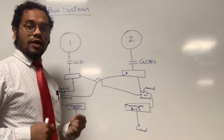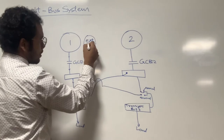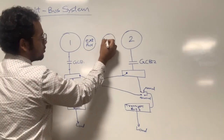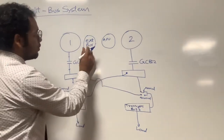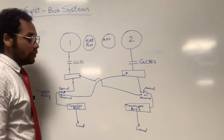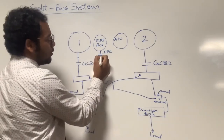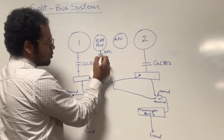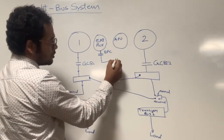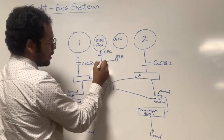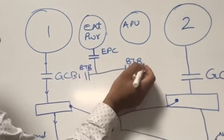In addition to the two main generators, we can also have the APU or external power as power sources. External power is connected through an external power contactor. The supply from the external power goes through bus-tie breakers — one bus-tie breaker connects to the left side and another connects to the right side. Similarly, the APU is connected through its own APU generator breaker.